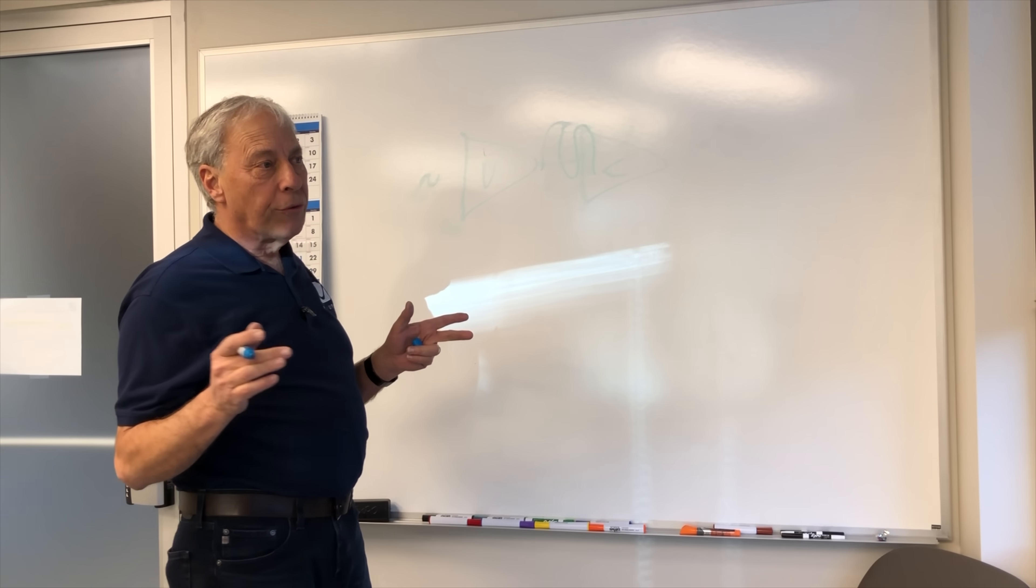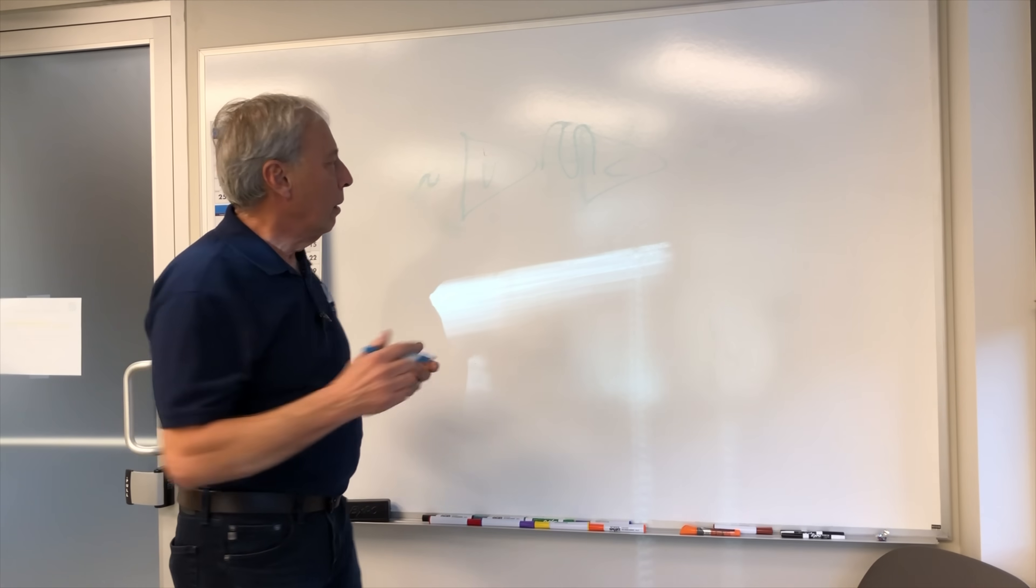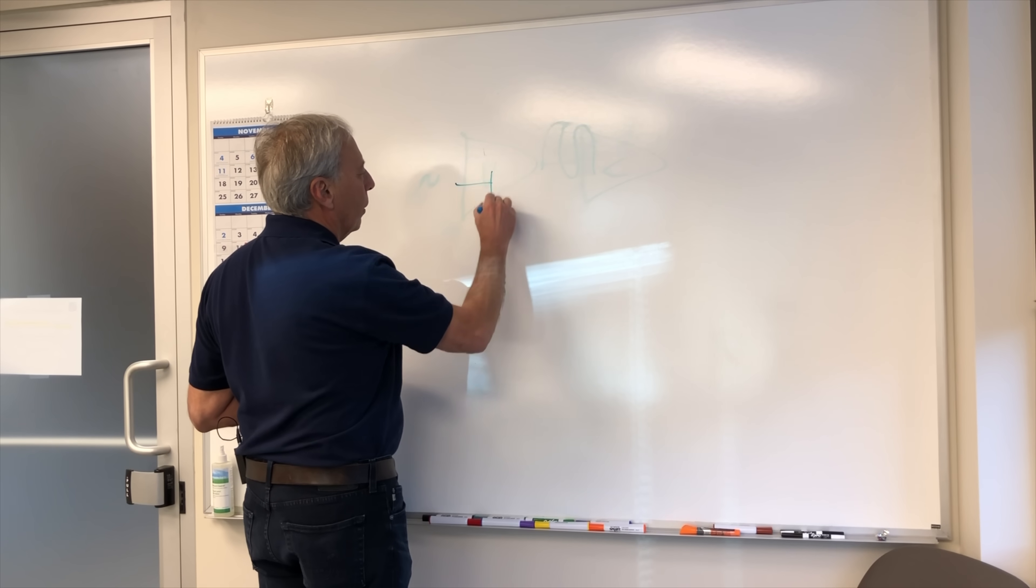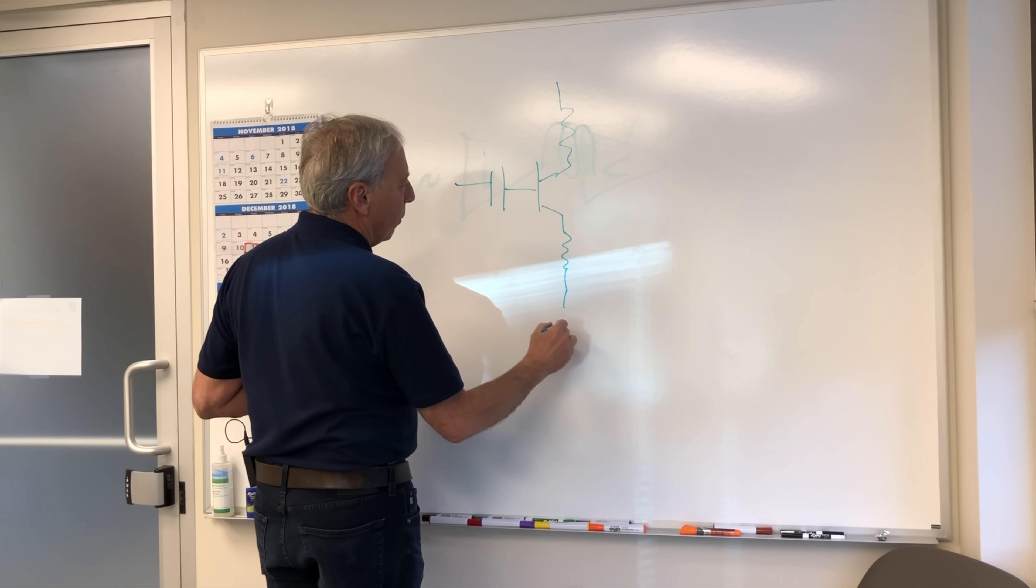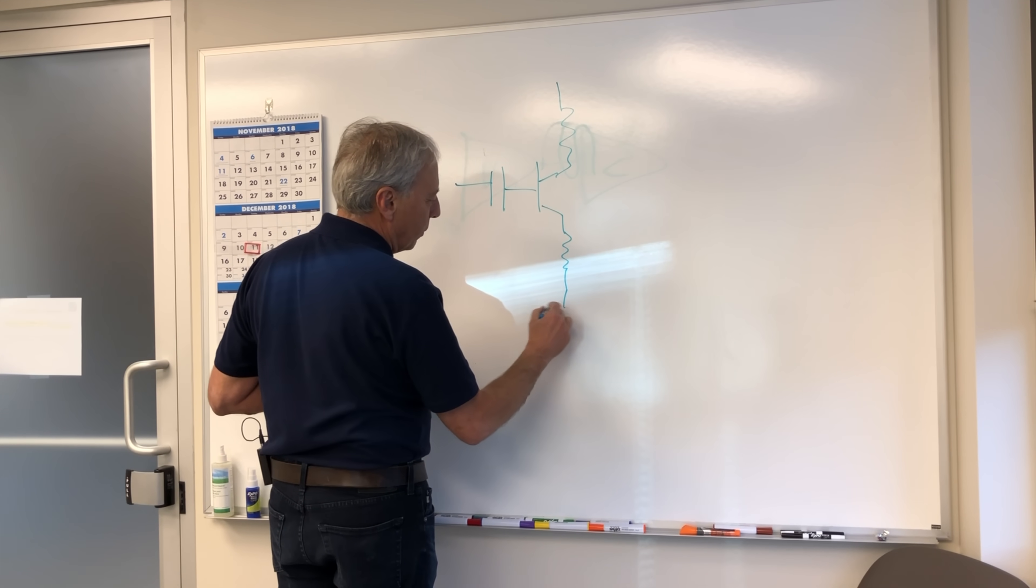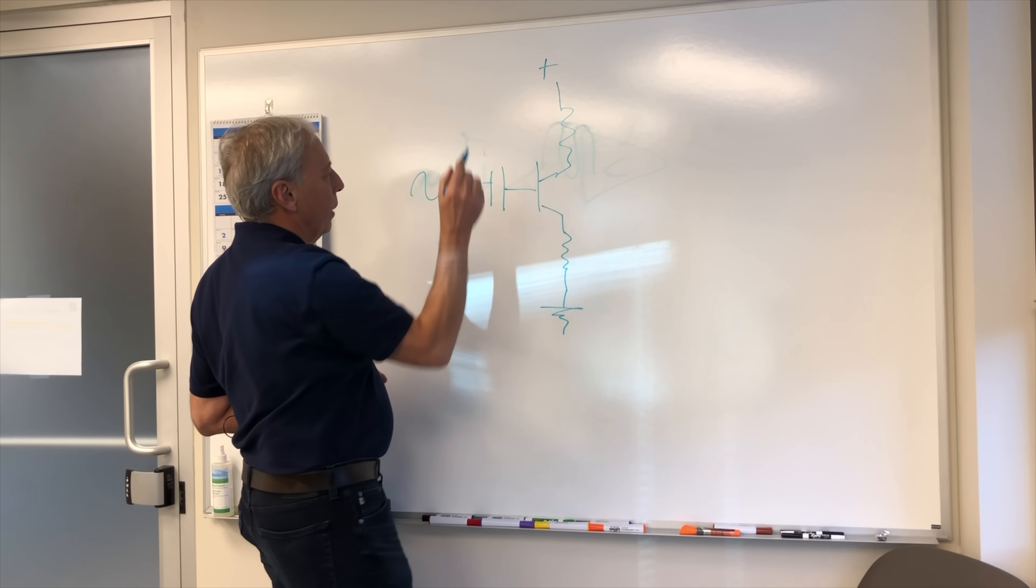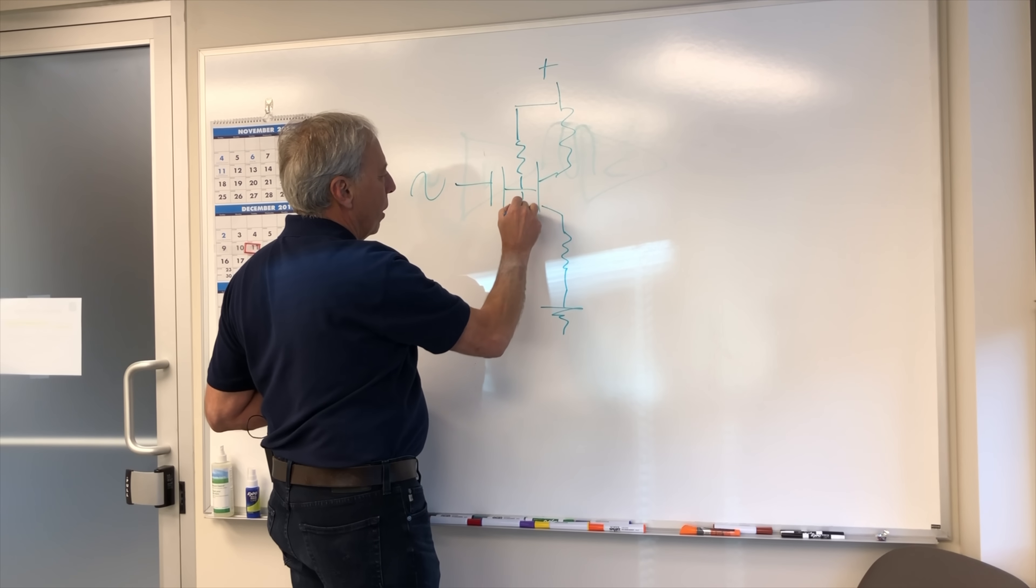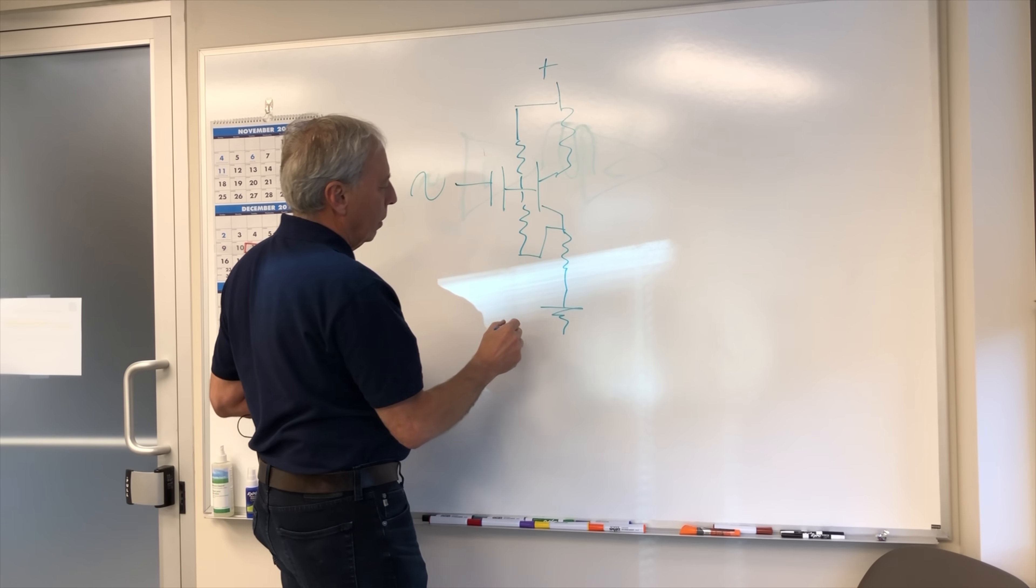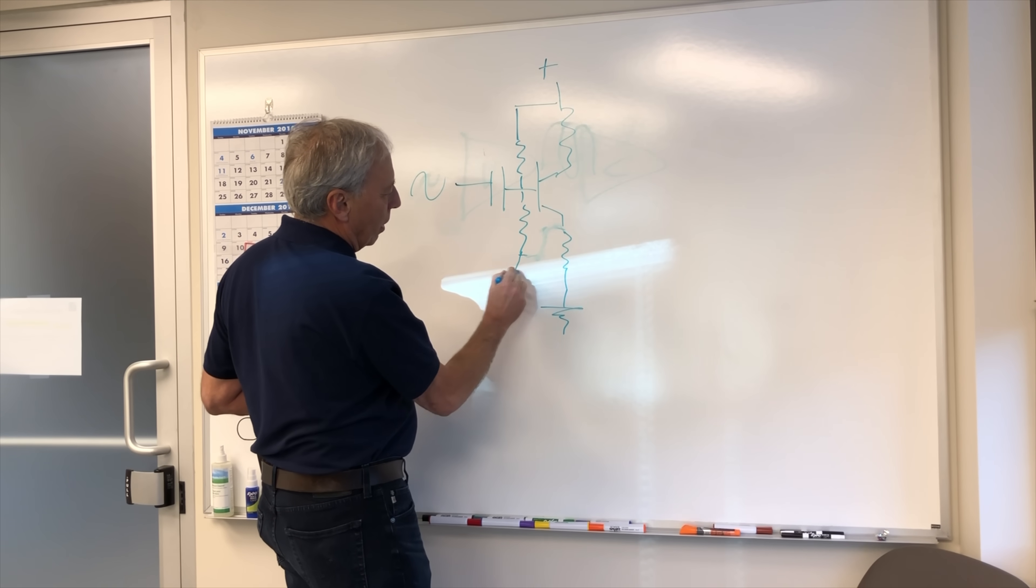So if we want to draw, let's say, a simple pre-amplifier, I'll put a capacitor, we'll just draw a transistor. Let's make it stupid simple. We won't have a dual power supply. So up here is plus, here's our input thingy. And then we're going to need some bias resistors to turn it on.